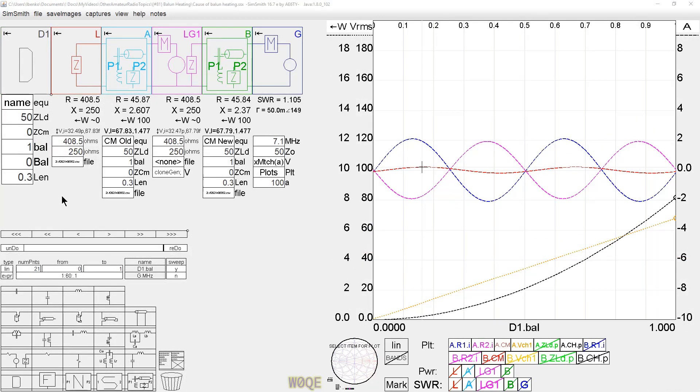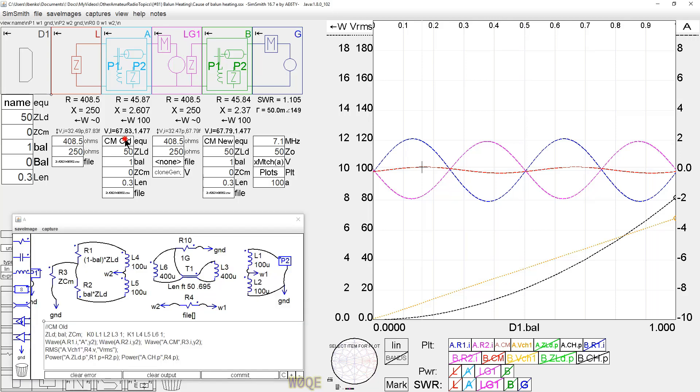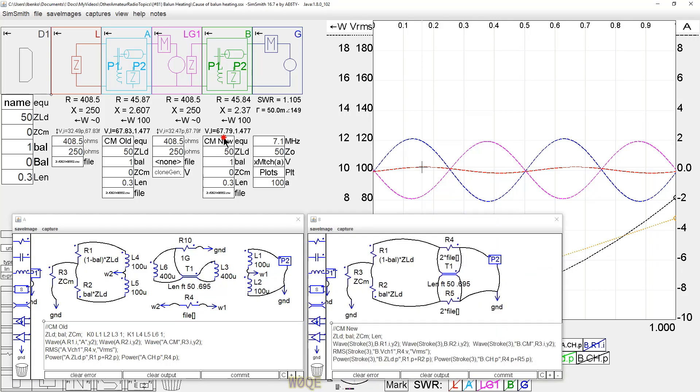Now that I had a common mode choke designed for about the impedance I thought I needed, I analyzed it in SimSmith using the same SimSmith file I used in the previous video. And this is the file that I made available for download. It consisted of a circuit that had coupled transformers and it also consisted of this circuit which uses a transmission line with impedances across both sides of it.